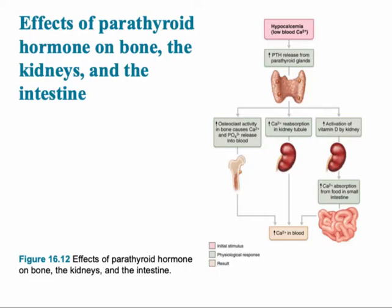Parathyroid hormone is the main hormone that controls blood calcium levels, and it works on the bone, the kidney, as well as the intestine. So if the blood has low blood calcium — hypocalcemia — there's a release of parathyroid hormone or parathormone from the parathyroid glands.